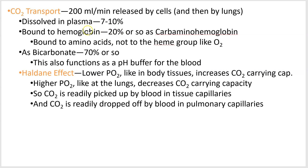20% of CO2 is carried by hemoglobin, but it's not bound to the heme group — the heme group is where oxygen is bound. It's bound to the amino acids. So hemoglobin that has carbon dioxide bound to it is called carbaminohemoglobin, meaning carbon dioxide on the amino group of hemoglobin. The rest is dissolved in plasma. So it's a bit more diverse how you transport CO2 back from the cells to the lungs.